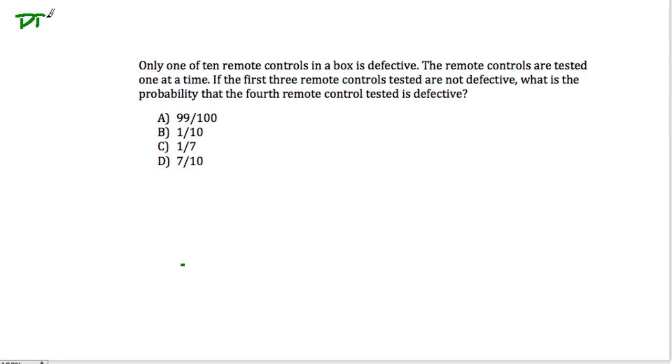The second video in the Praxis 2 probability series for the 0061 test. Here they are saying if one of ten remote controls in a box is defective.